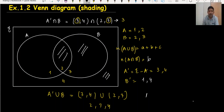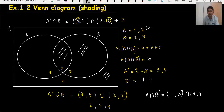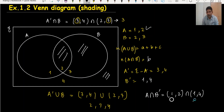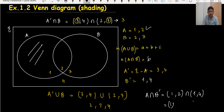What about A intersection B complement? Area for A is 1 and 2. Area for B complement is 1 and 4. We need to find which area is common to both. The common area is only area 1. So I will shade only this part. This finishes the two-set A and B examples.